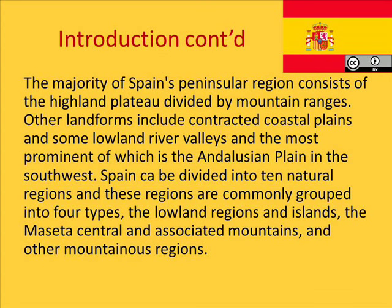The majority of Spain's peninsular region consists of highland plateau divided by mountain ranges. Other landforms include contracted coastal plains and some lowland river valleys, the most prominent of which is the Andalusian plain in the southwest. Spain can be divided into ten natural regions.